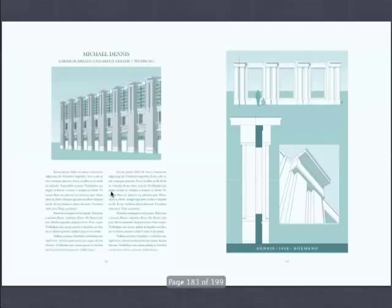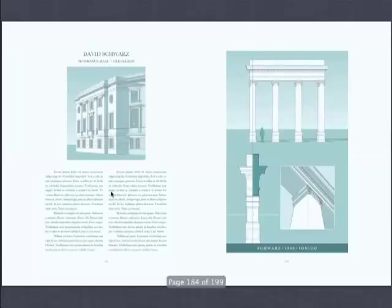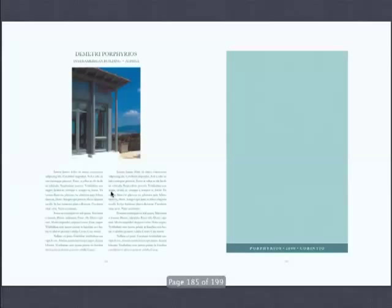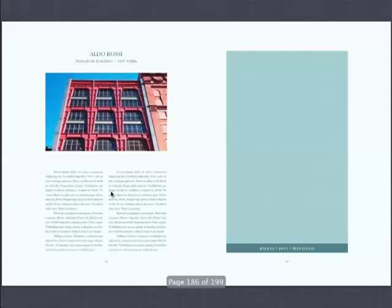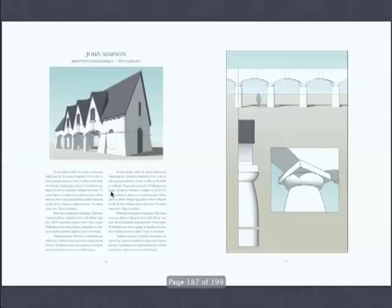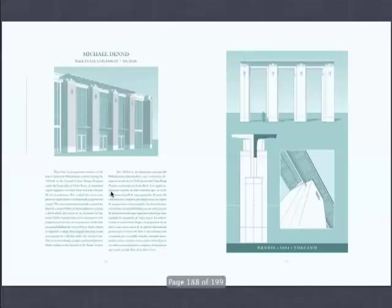Porphyrios Rossi, doing obviously an order in steel — a Minoan. John Simpson with the milk bottles, which is fine when you're in a rustic place like Poundbury. This is an exquisite Michael Dennis, very much dialoguing with Frank Lloyd Wright, and actually I think succeeding in saying: if Frank Lloyd Wright had really taken the time, he might have come up with this.